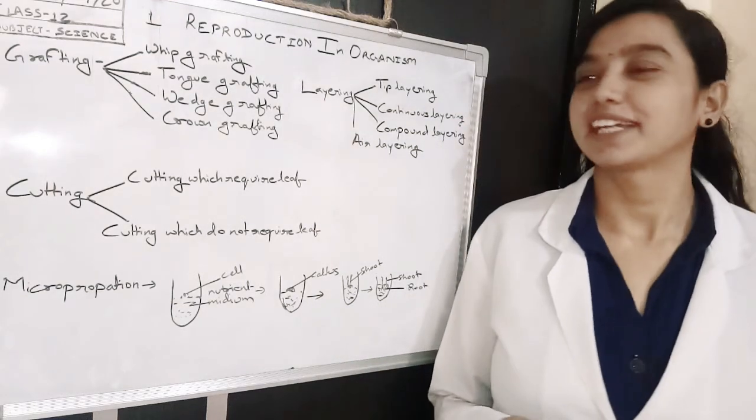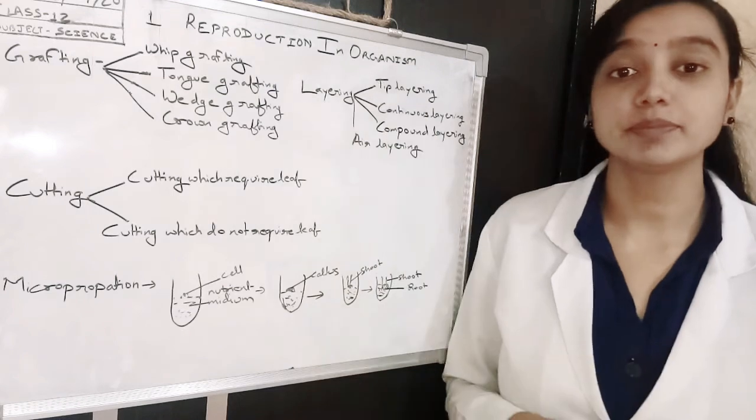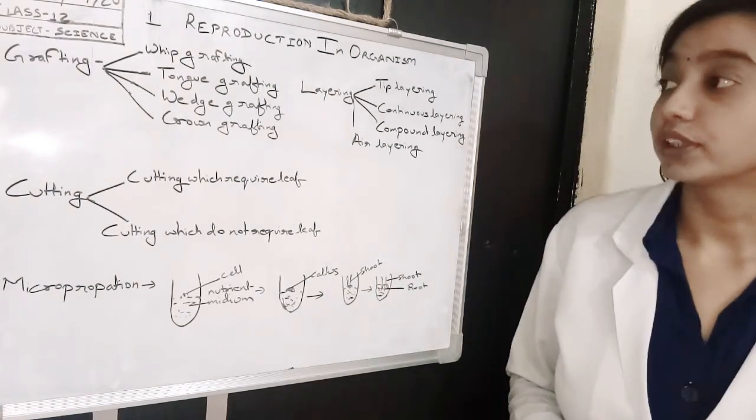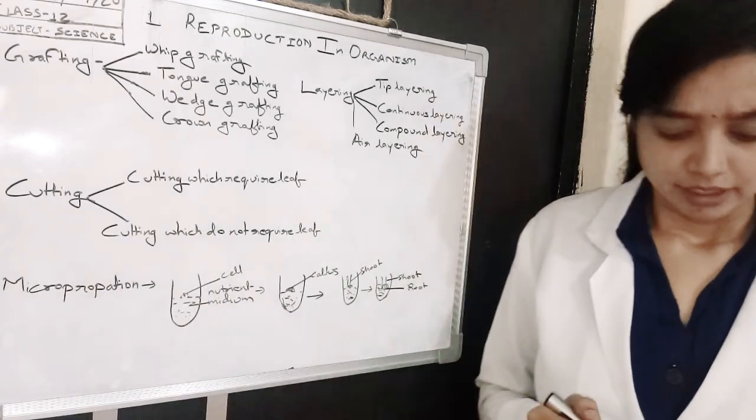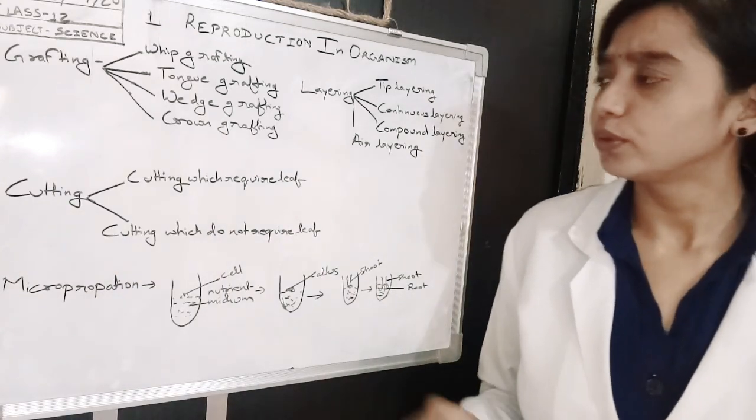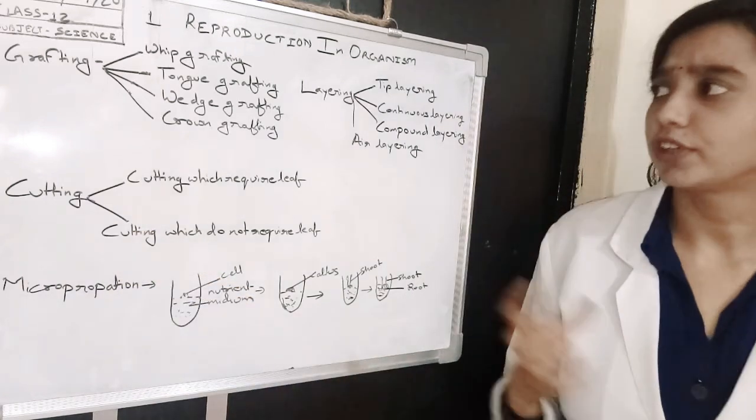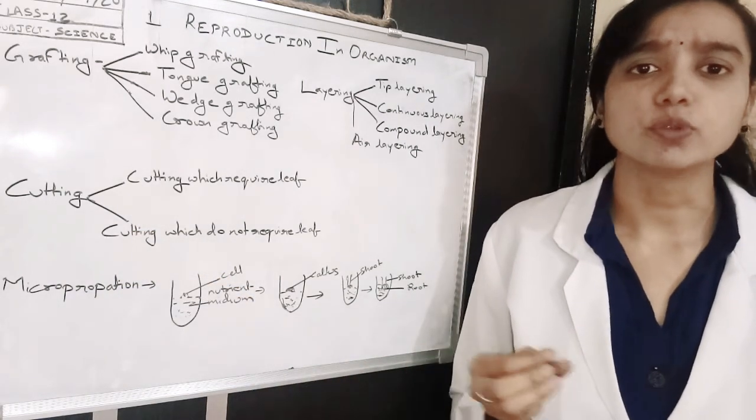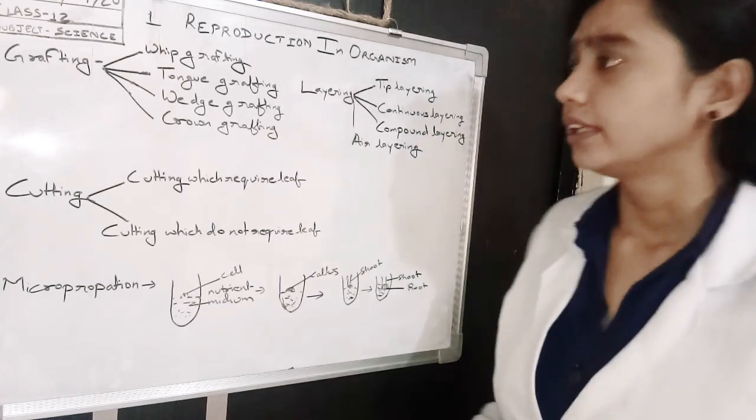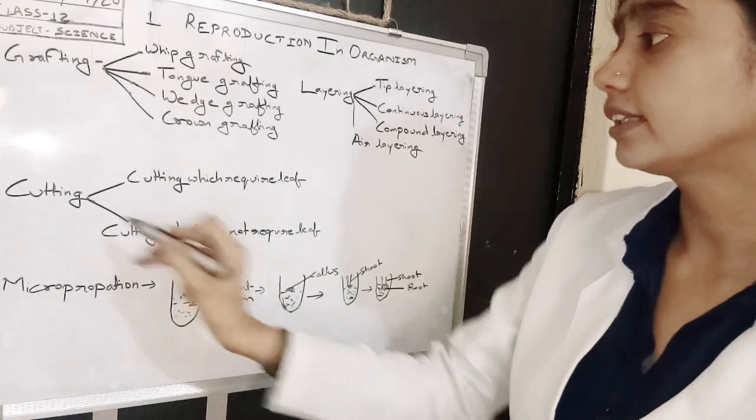Hello everyone, welcome once again. Myself Jyoti Tiwadi and I am teaching you chapter Reproduction in Organisms. Here I am going to discuss grafting, layering, and cutting. I have already told you what these are, but there are several definitions that students may get confused about. These definitions are actually types of grafting, layering, and cutting.